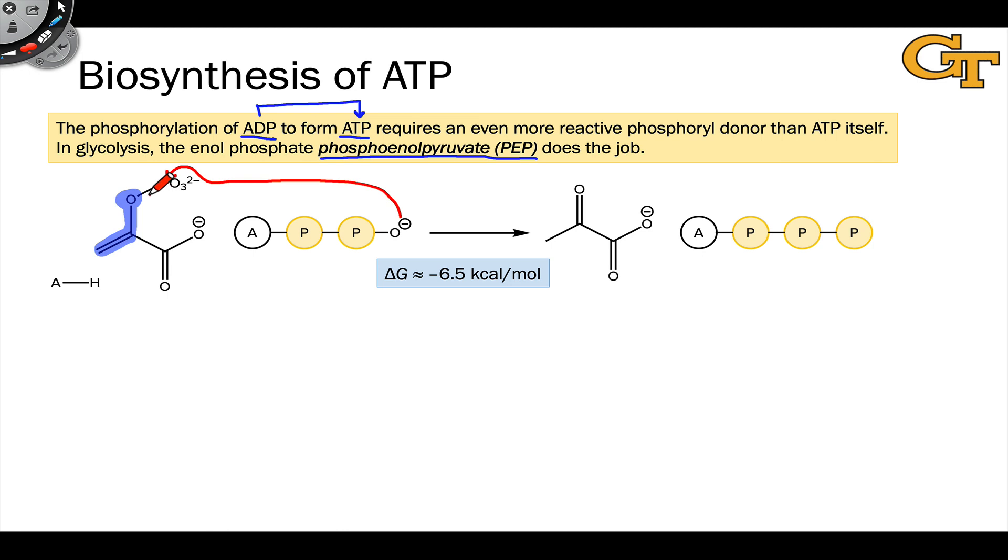This results in the formation of a CO double bond and protonation of the alpha carbon of PEP to go directly to the products, which are pyruvate—that's the molecule you see here—and a molecule of ATP.